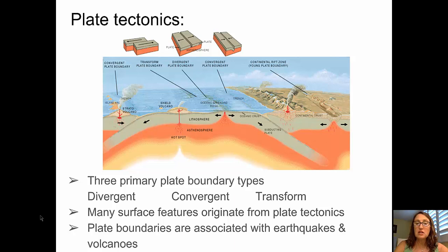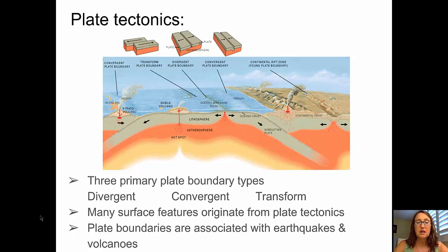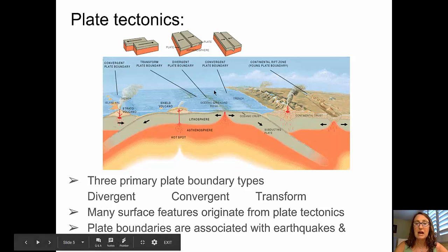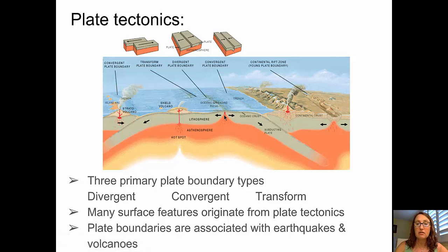With plate tectonics, we'll be talking about three primary types of plate boundaries. They are divergent, where plates move away from each other; convergent, where plates move toward one another; and transform, where they slide past each other. Both divergent and convergent have a vertical component to them. At divergent boundaries, magma comes up in the middle of the ocean along an ocean spreading ridge, as shown in the diagram.